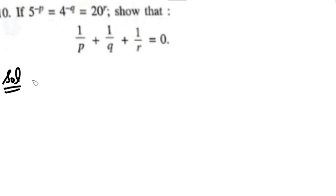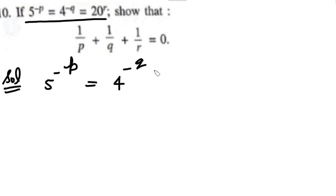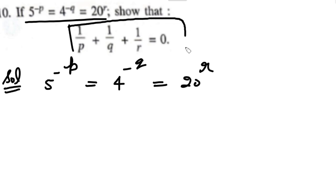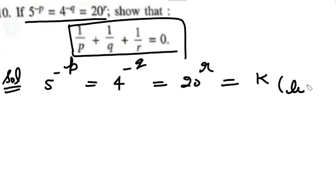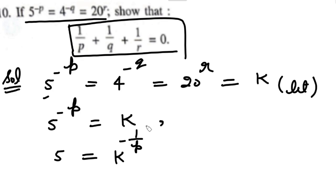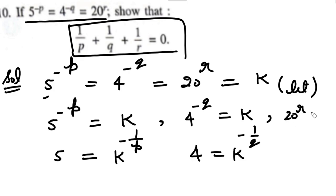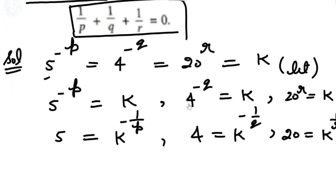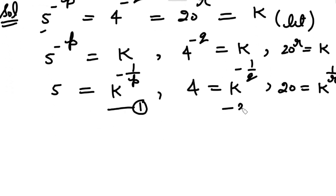Question number 10 has a result similar to question 9. The given result is used to prove a new result. We let it equal K. Considering the first expression: 5 raised to the power minus P equals K means 5 equals K raised to the power minus 1 upon P. Similarly, 4 raised to the power minus Q equals K means 4 equals K raised to the power minus 1 upon Q. And if 20 raised to the power R equals K, then 20 equals K raised to the power 1 upon R. This gives us relation 1, relation 2, and relation 3.